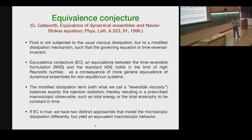This extends in some sense from chaotic hypothesis and has to do with Galavotti-Cohen fluctuation theorem. But taking this forward, he conjectures an equivalence between time-reversible formulation and the standard Navier-Stokes equation that holds in the limit of high Reynolds number, as a consequence of more general equivalence of dynamical ensembles for non-equilibrium systems.